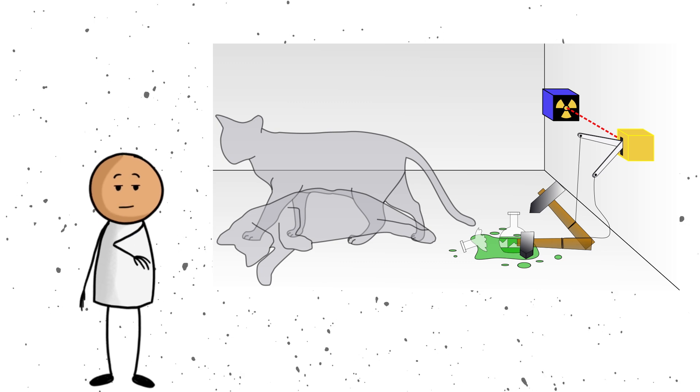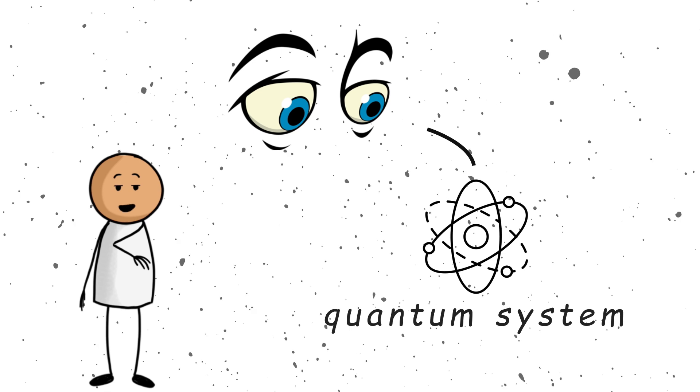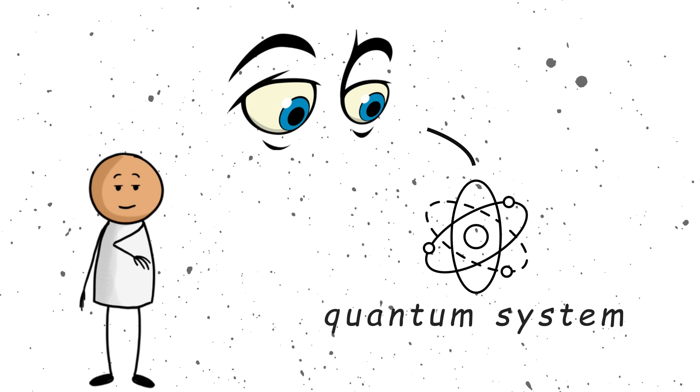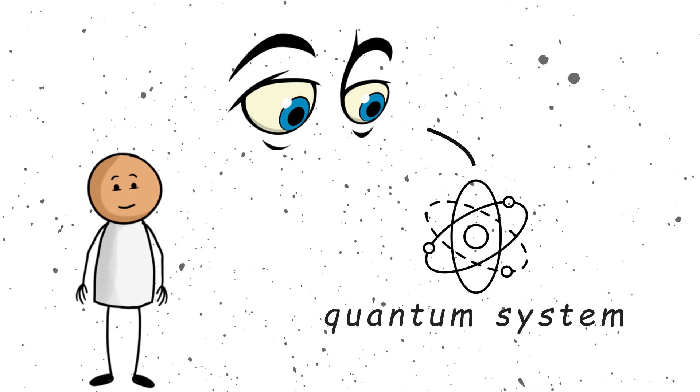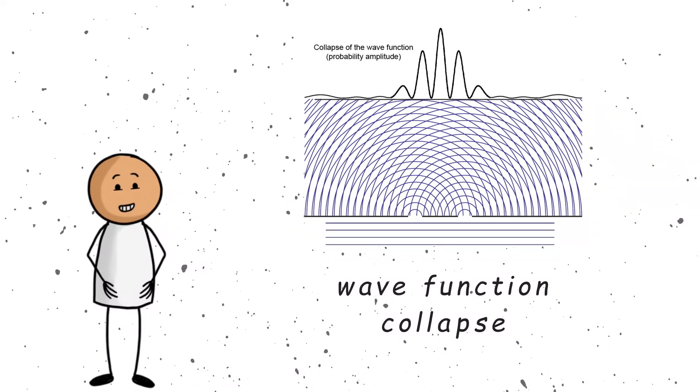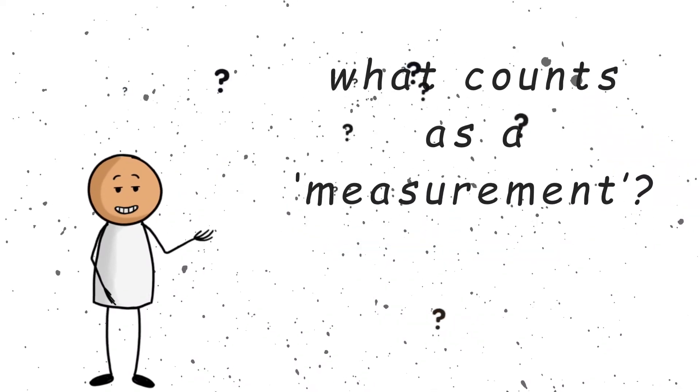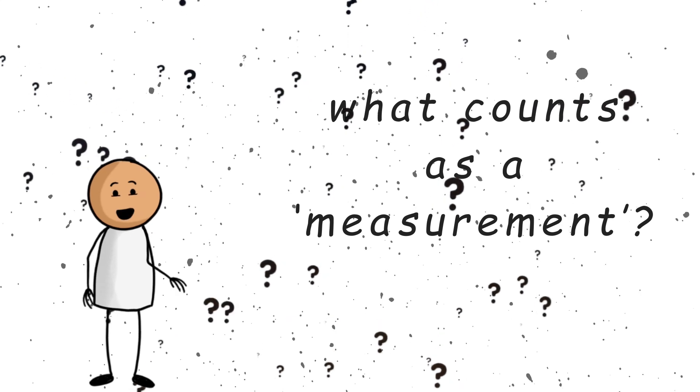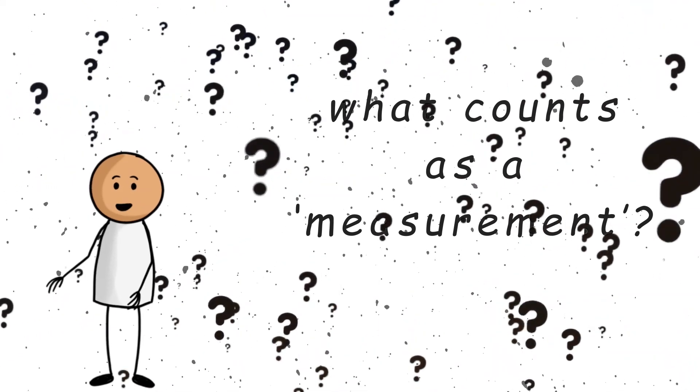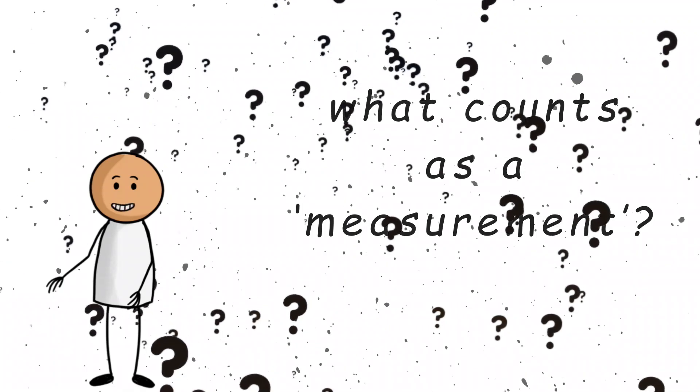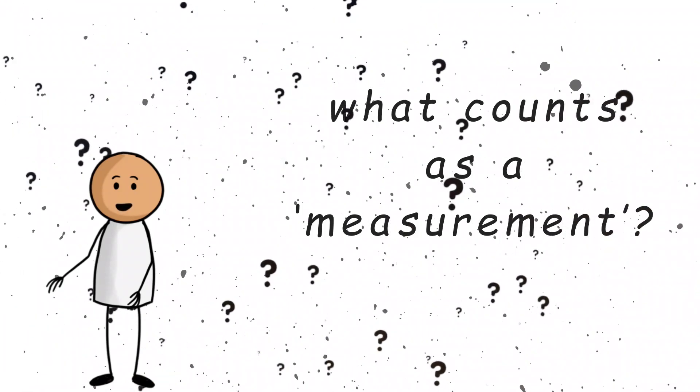Now, here comes the measurement problem. The moment we observe or measure a quantum system, that cloud of possibilities suddenly snaps into one clear outcome. This is called wave function collapse, and no one knows why it happens. The big question is, what counts as a measurement? Does a human have to be watching? Is it the measuring device itself? Is the universe just playing coy until someone pays attention?